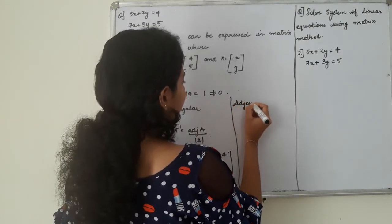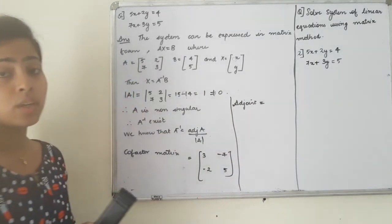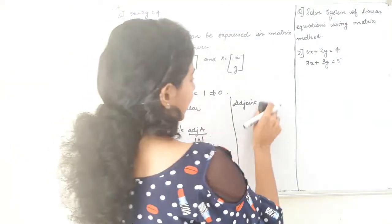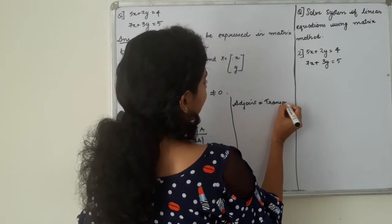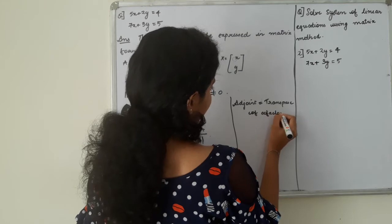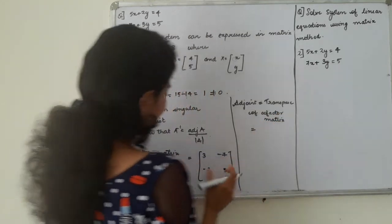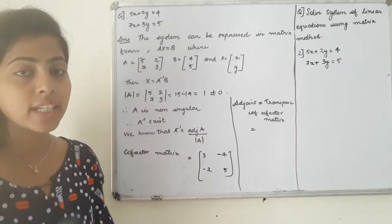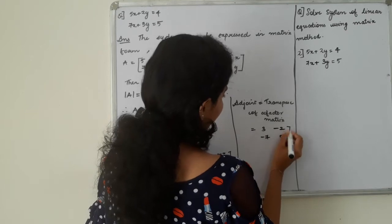Adjoint of cofactor matrix. Cofactor matrix e transpose. Transpose of cofactor matrix. Adjoint is transpose of cofactor matrix, 3, minus 2, minus 7, 5.